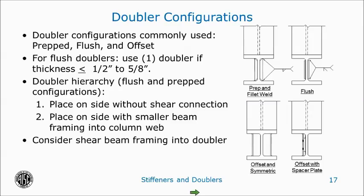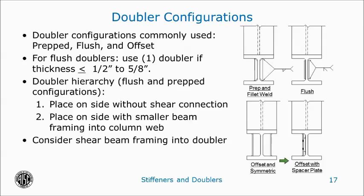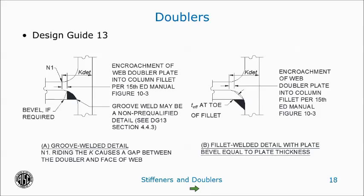There's a handful of doubler configurations commonly used. In our office, we will typically use the top two configurations — either a doubler that is flush to the column weld and then groove-welded into the column radius, or a thickened doubler that is prepped to clear the column radius, which can be a very cost-effective option. If there is no infill beam framing into the member web, we have also used an offset symmetric option. The least fabricator-friendly would be the offset doubler with a spacer plate. When doublers are required, one of the first questions we'll ask the fabricator is what is the maximum thickness they would like to use before the doubler thickness is cut in half and one is placed on each side of the column web. Typically that answer is anywhere between a half inch to five-eighths.